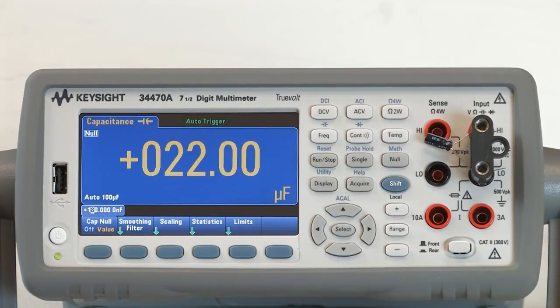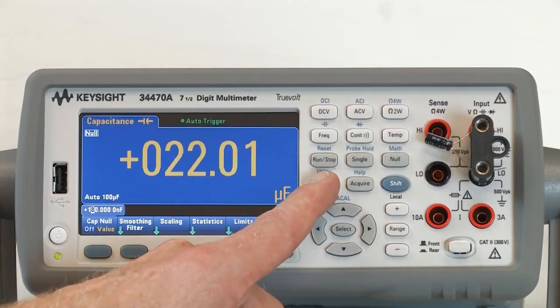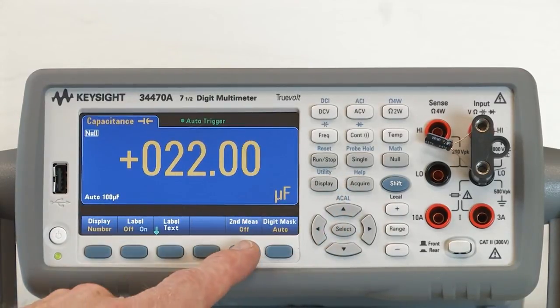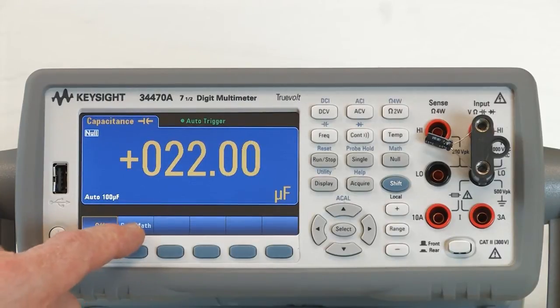If we want to see the reading and the null values simultaneously, or as a secondary measurement, we again enable the secondary measurement capability of the DMM by pressing Display, Secondary Measurement Off, and you'll notice we have pre-math.